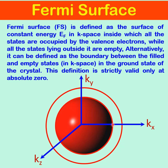If you cross this K value — beyond this surface — the states are empty. Therefore, the Fermi surface is the surface which separates the occupied states from the unoccupied states; it is the boundary between the occupied and unoccupied states.